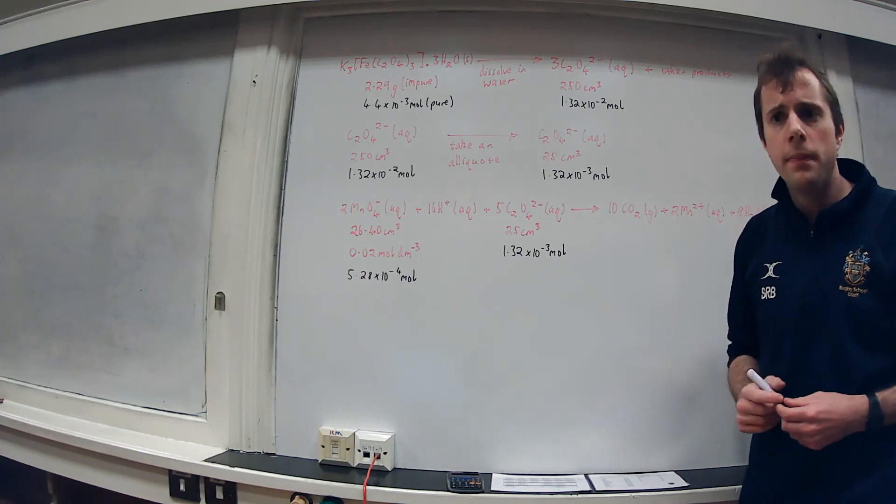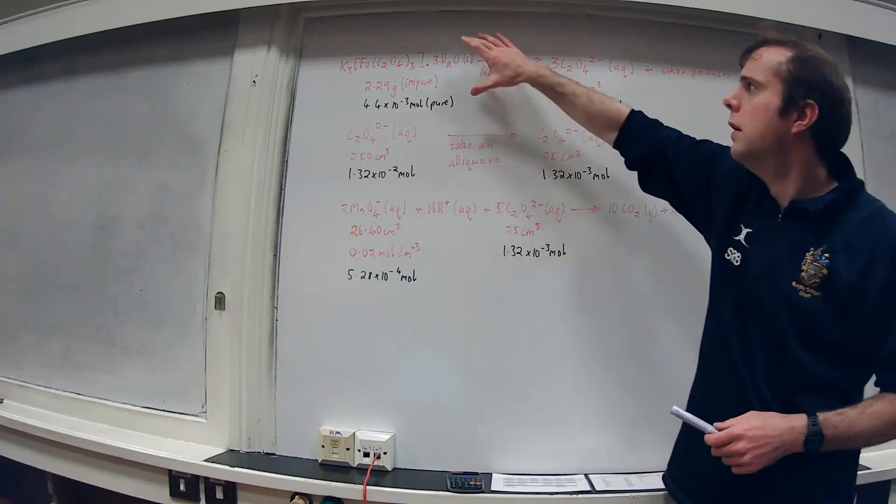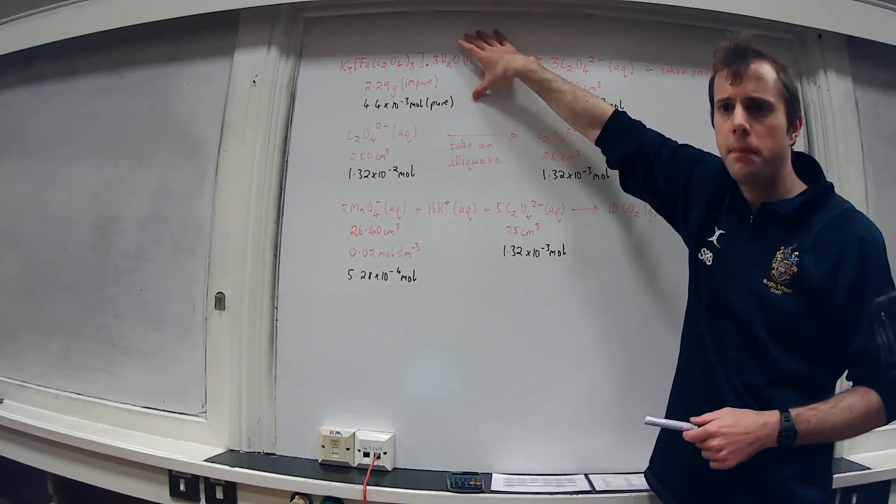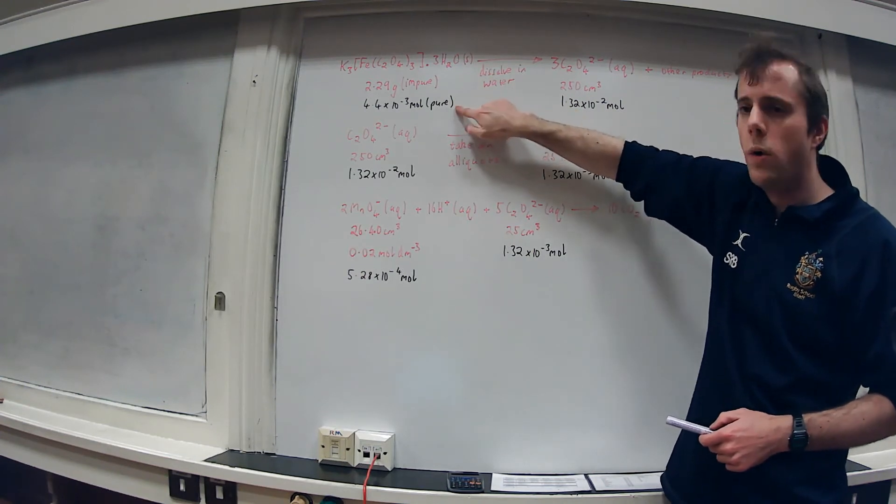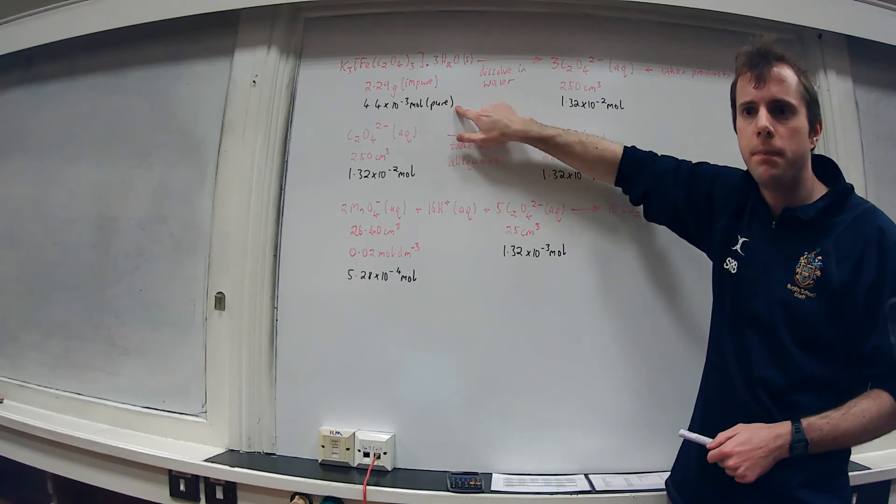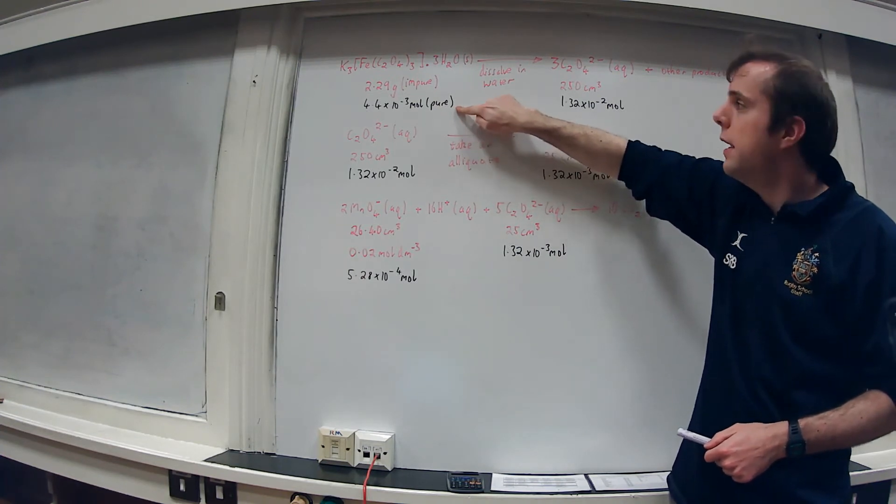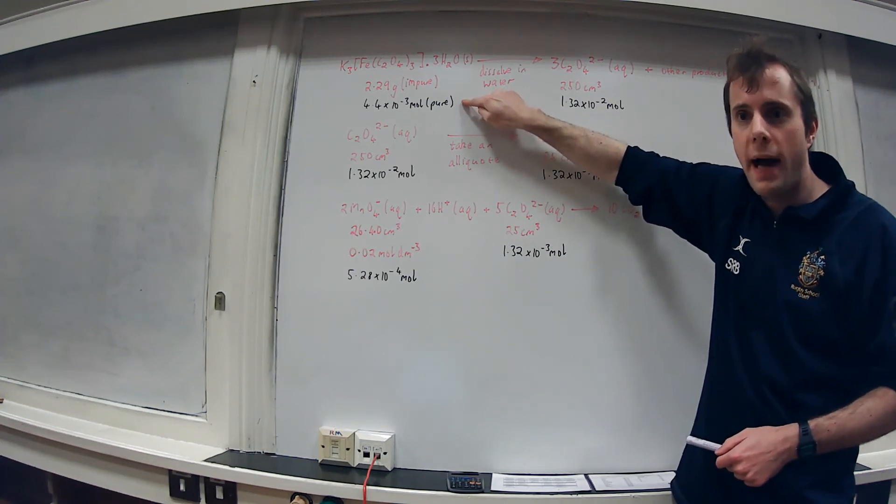Now what we need to do at the end of the calculation is to work out the percentage purity of this original sample. So we have the original impure mass and we've just worked out the pure number of moles. So the next step is to convert this pure moles into a pure mass.